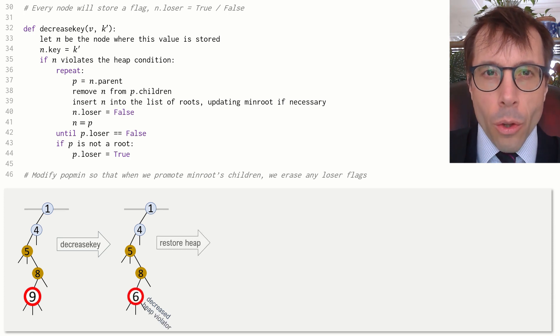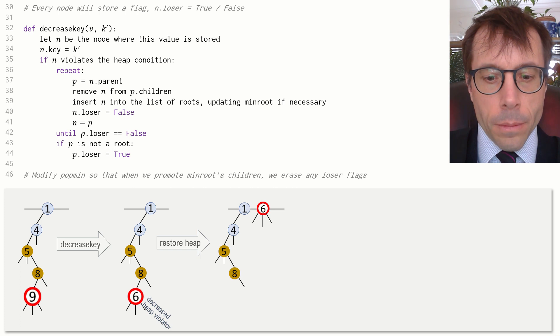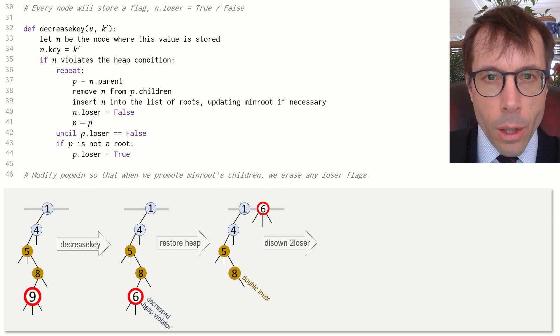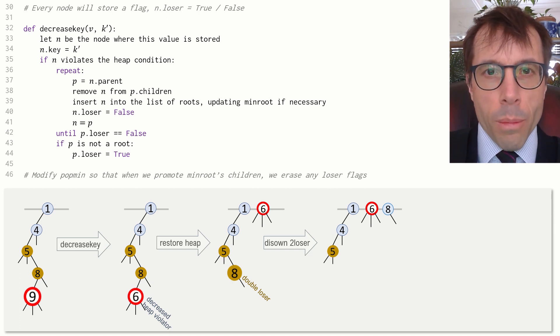First step, the node whose key we just decreased is now a heap violator. So to restore the heap, we're going to dump it into the root list. Now we have a double loser, this node 8, so its parent disowns it, and it gets kicked into the root list and its loser mark is wiped clean.